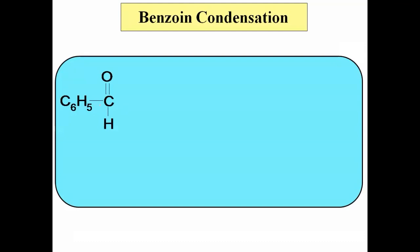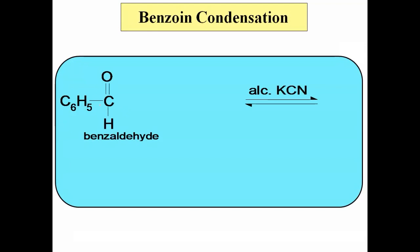The starting material used for this reaction is benzaldehyde. Generally, this reaction is shown by aromatic aldehydes only. Benzaldehyde on reaction with alcoholic KCN — it is treated with alcoholic KCN. Here, two molecules of benzaldehyde participate in the reaction.